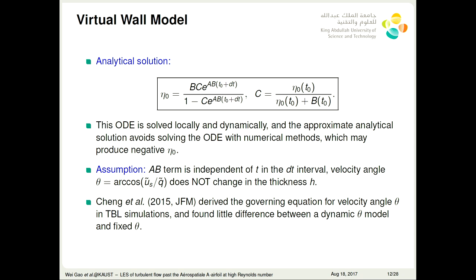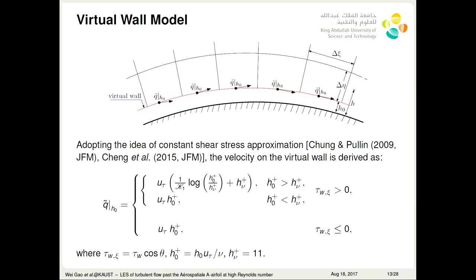The assumption is as follows. First is that the a-b-turn is independent of t in the very small dt integral, and the velocity angle doesn't change in the thickness from the solid wall to the virtual wall. Wang and Choi developed the governing equation for velocity angle in turbulent boundary layer simulations and found that there's very little difference between a dynamic theta model and fixed theta. So here, for simplicity, we also use the fixed theta assumption in our wall model LES code. Finally, adopting the idea of constant shear stress approximation, the velocity on the virtual wall is derived as follows. Here, in the separation zone, we use the linear profile for the velocity, and in the attached zone, it follows the linear log profile.